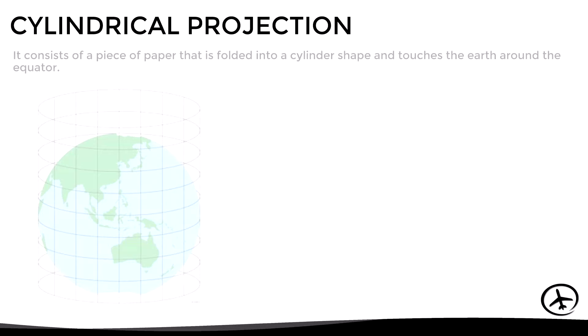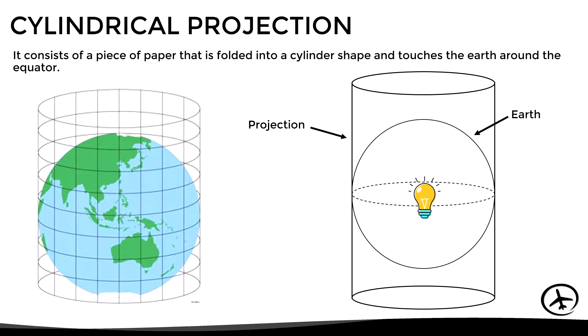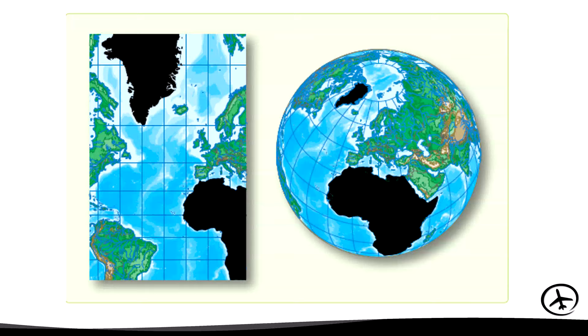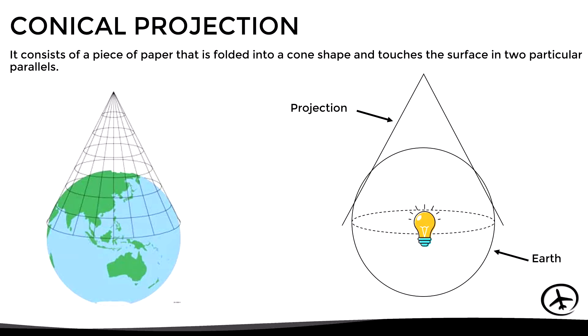The cylindrical projection consists of a piece of paper folded into a cylinder shape that touches the earth around the equator, as seen in these images. Since the projection touches the entire equator line, its main characteristics are: near the equator there is no distortion; distortion increases as we move away from the equator; meridians and parallels intersect at 90-degree angles, making it easier to measure direction; and it shows shapes correctly but sizes are distorted. A clear example is the representation of Africa and Greenland — in reality Africa is much bigger, but due to distortion they appear almost the same size.